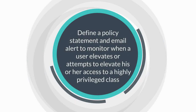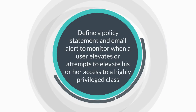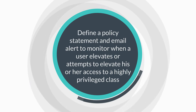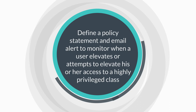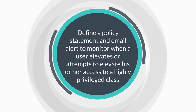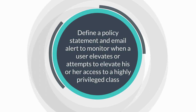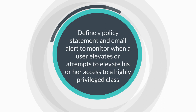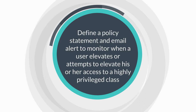In this demo, we'll define a policy statement and an email alert in CA Compliance Event Manager to monitor when a user elevates or attempts to elevate his or her access to a highly privileged class that gives the user access to restricted sensitive data. We'll also show an example of an email alert generated when sensitive data is accessed in a suspicious manner, but we'll assume such monitoring is already in place.